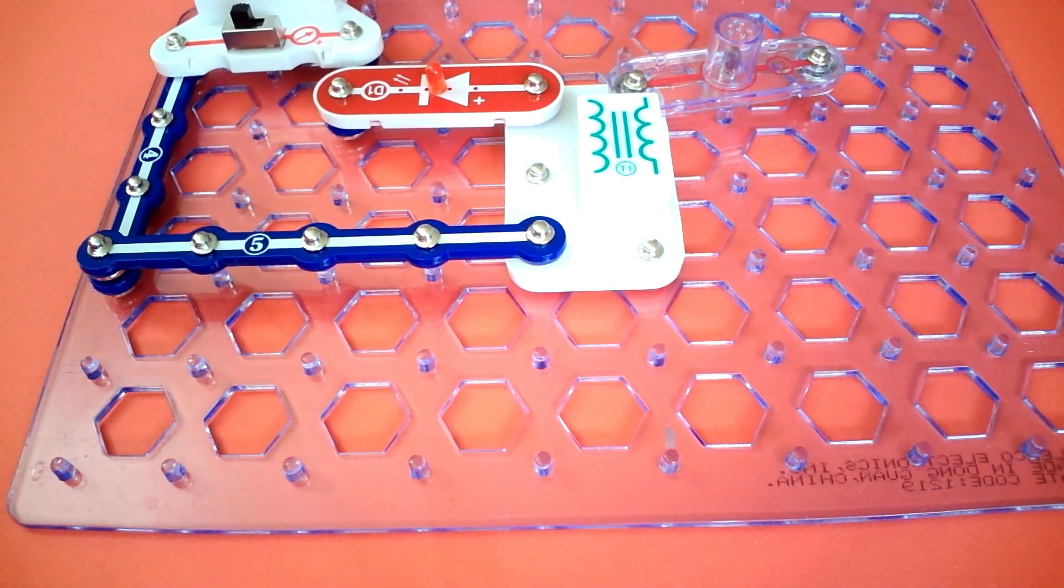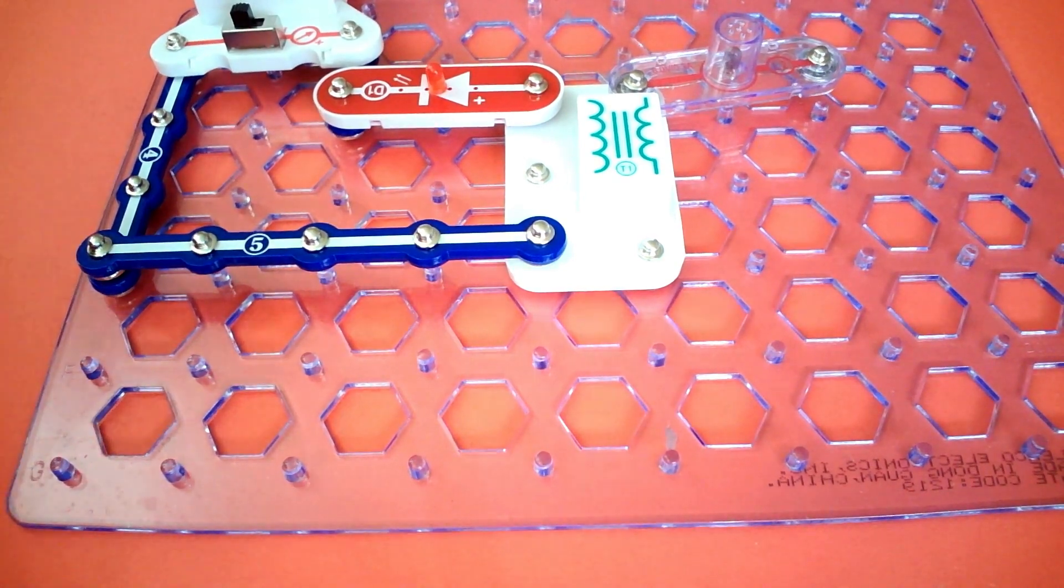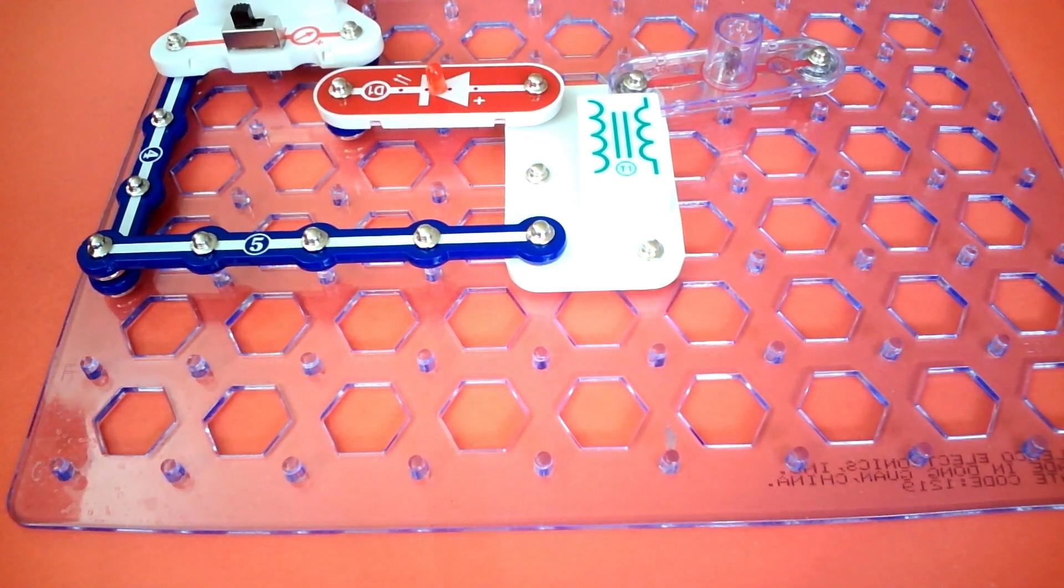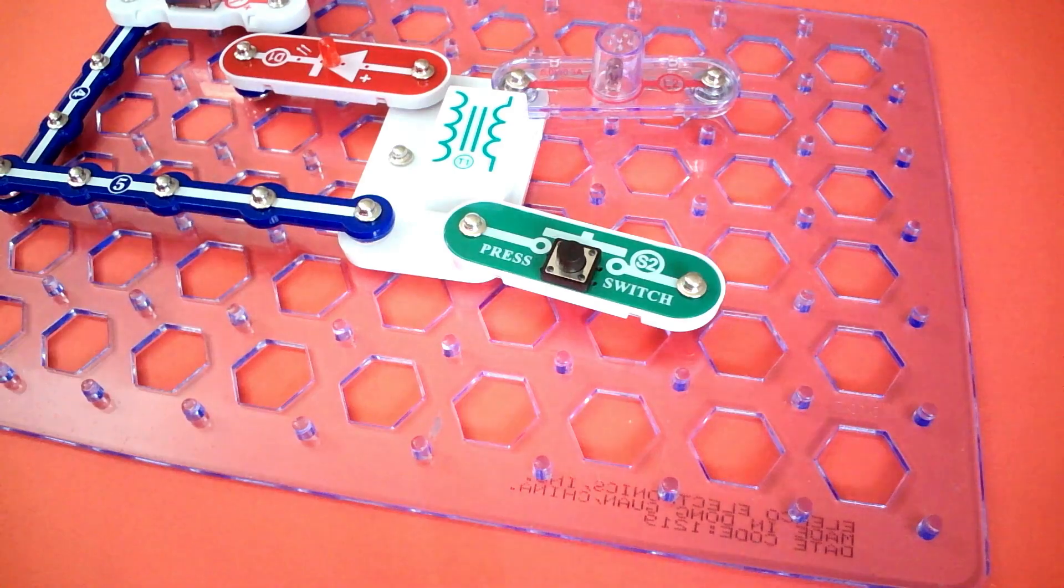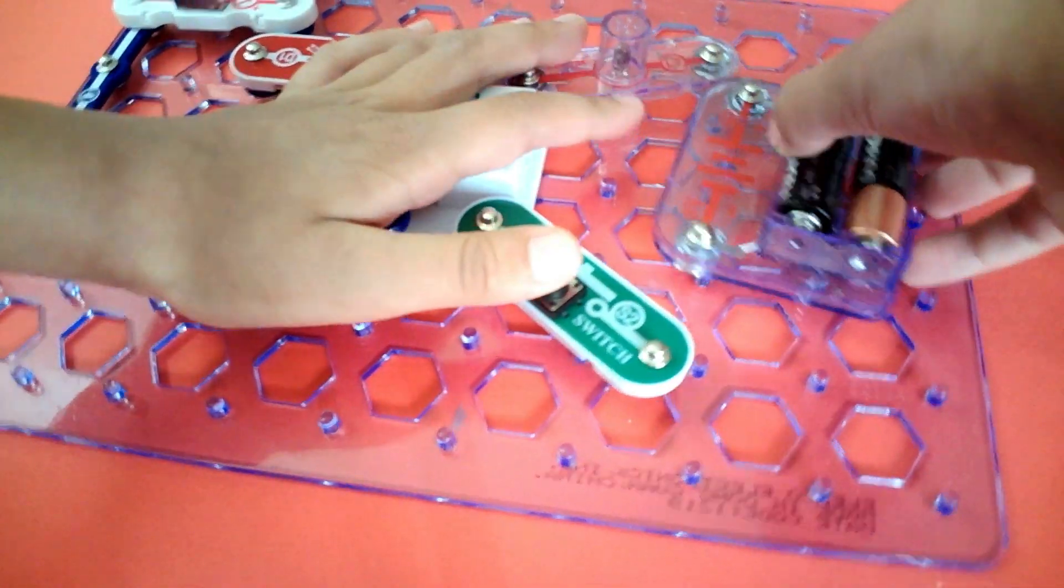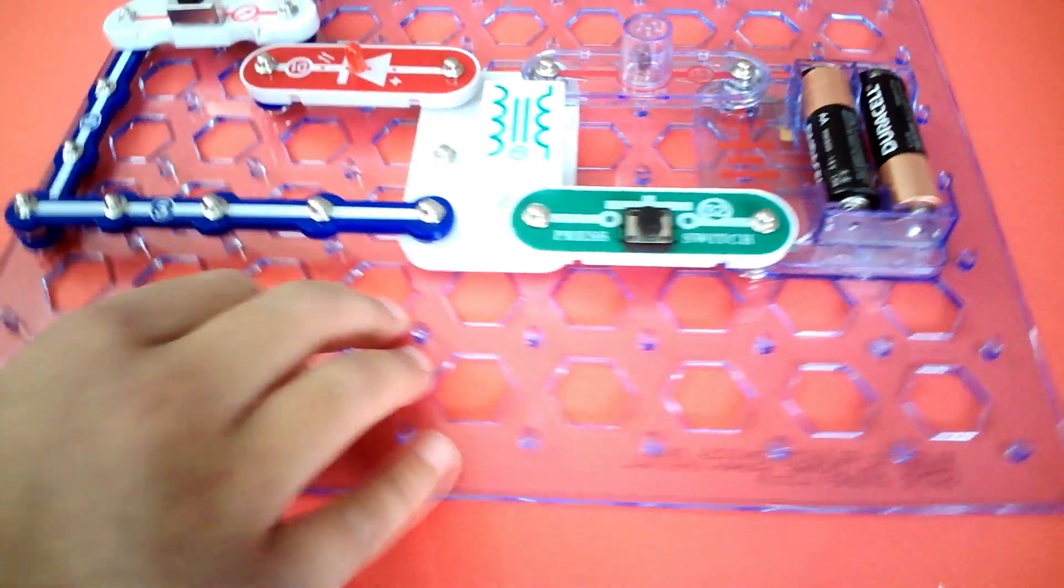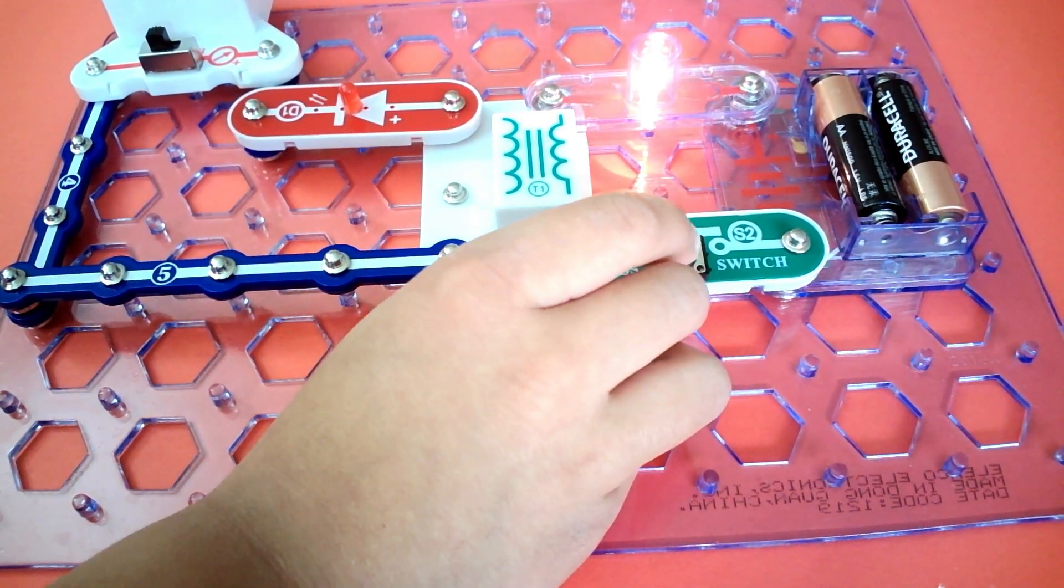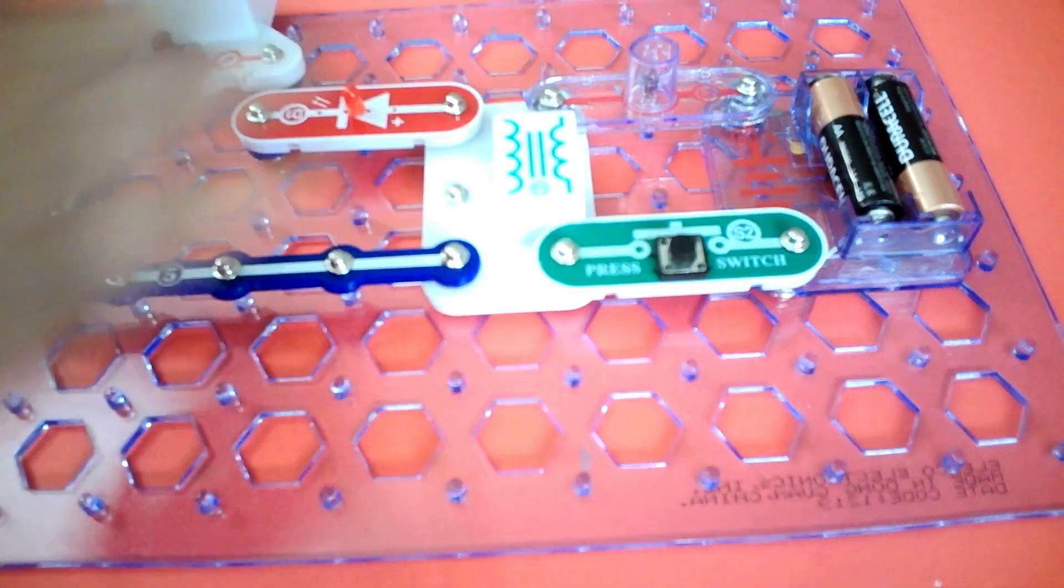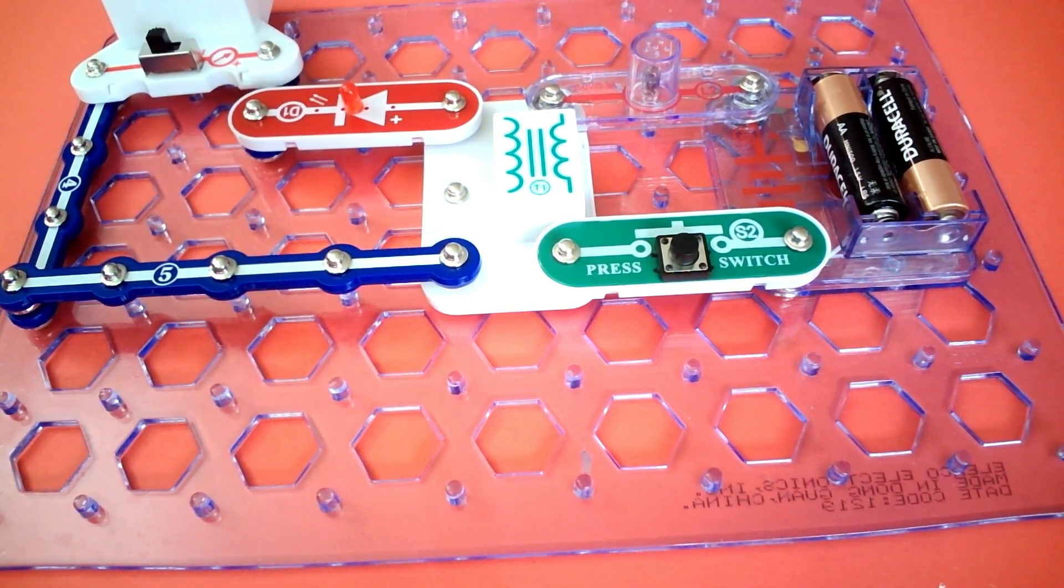Place S2 switch—that is the press switch over here. And of course for every circuit we use a battery, and we place the battery here. Turn it on. It lights—the D1 lights.